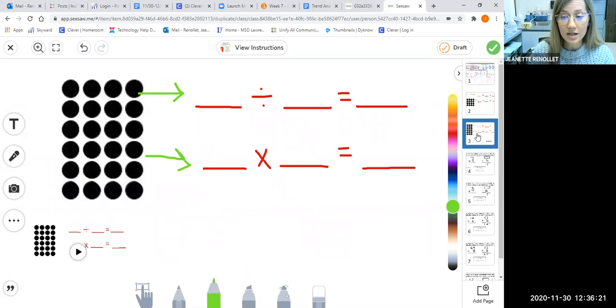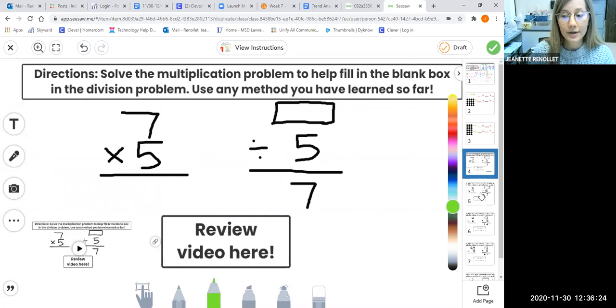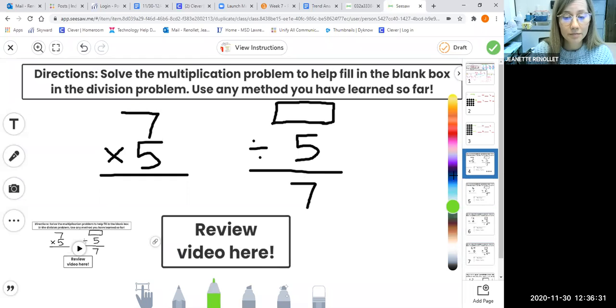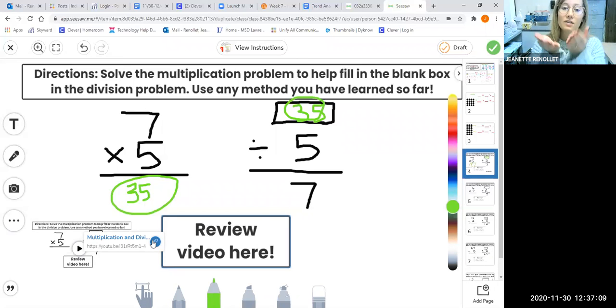When you are done with slide three, slides four, five, six, and seven are all the same. What you need to do is use your knowledge of fact families to help you solve. You need to fill in the missing number for each equation. So I know seven times five is 35. That means when I divide 35, divide by five, equals seven. If you get stuck, you have a review video here that you can watch to remind you of how multiplication and division work together.